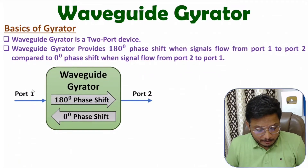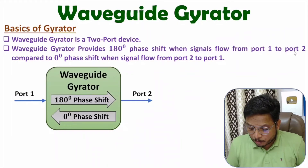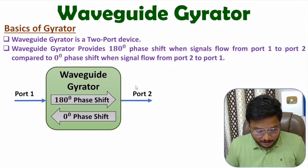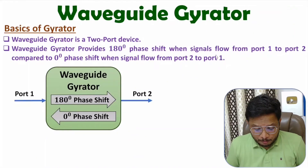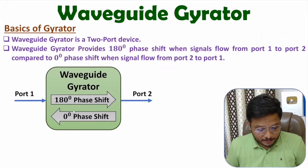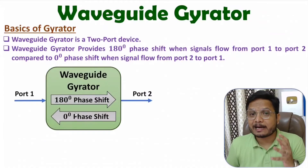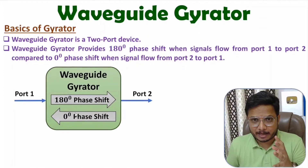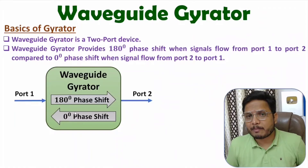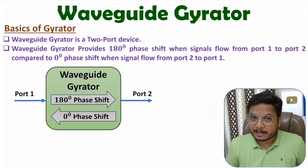So working is based on phase shift: input at port 1 gives 180-degree phase shift at port 2, and input at port 2 gives zero-degree phase shift at port 1. But how exactly does this working come about? Let us try to understand that through its internal structure.